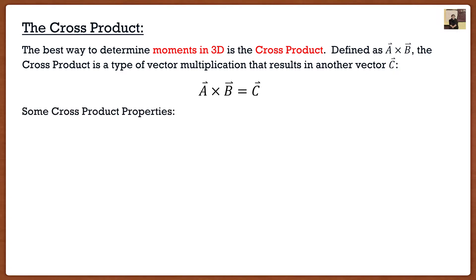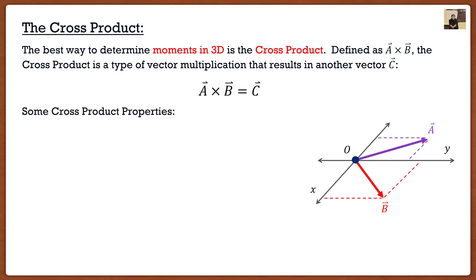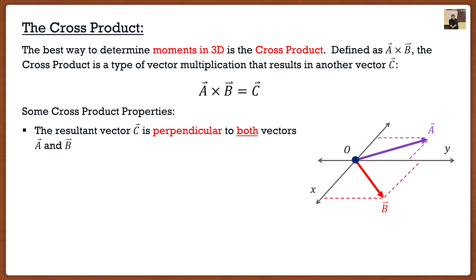This result, vector C, has some very specific properties. The first one is this: let's say that vector A and vector B are in the XY plane. If I were to take vector A and cross it with vector B, the resultant vector C is going to be perpendicular to both A and B — no matter what it is, a force vector, position vector, anything.